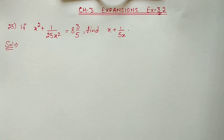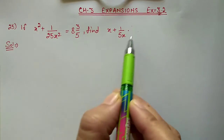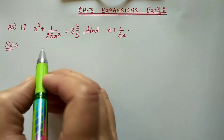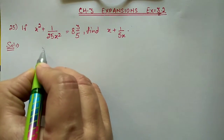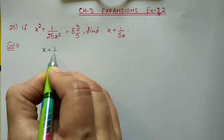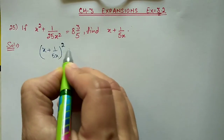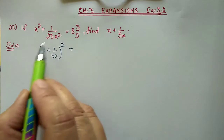If x² + 1/25x² is equal to 8 whole number 3/5, find the value of x + 1/5x. So we will start from what we have to find out. We will do the squaring of x + 1/5x, so (x + 1/5x)² equals...